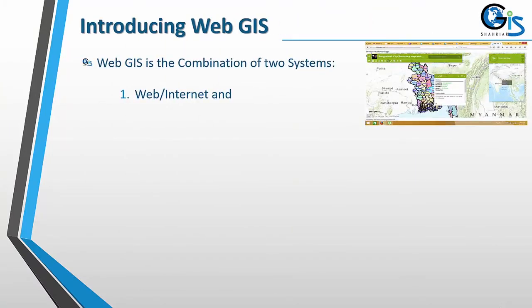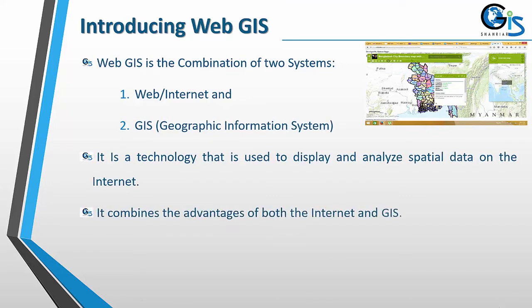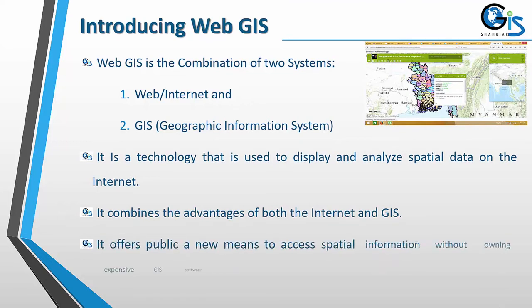Introducing Web GIS. Web GIS is the combination of two systems: number one is web or internet, and number two is GIS, which means Geographic Information System. It is a technology used to display and analyze spatial data on the internet. It combines the advantages of both internet and GIS, and offers the public a new means to access spatial information without owning expensive GIS software.